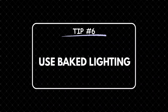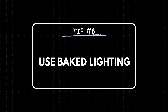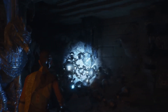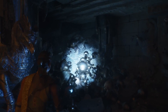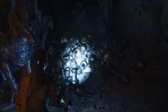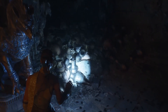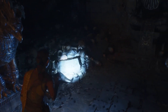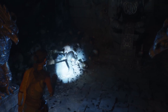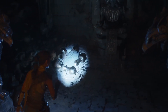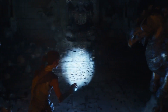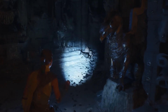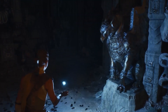Tip number 6: Use baked lighting. Real-time lighting shadows can be quite costly, especially in scenes with many light sources. This can lead to slower frame rates and put a lot of pressure on your hardware, which impacts performance.